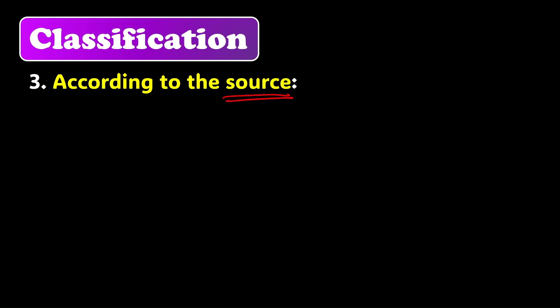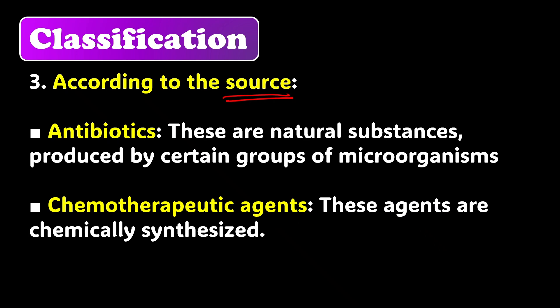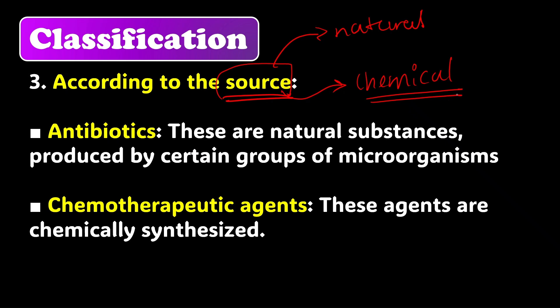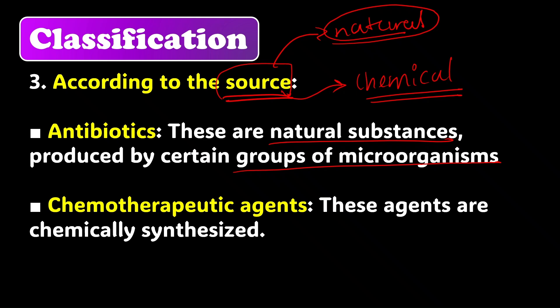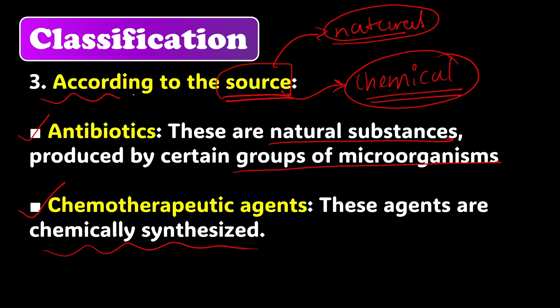The third basis is according to the source — not so important. Simply put: if the antimicrobial agent is naturally produced by involvement of certain groups of microorganisms it is called an antibiotic; if it is chemically synthesized it is called a chemotherapeutic agent. However, this classification is not commonly used today because many synthetic analogs have been synthesized.